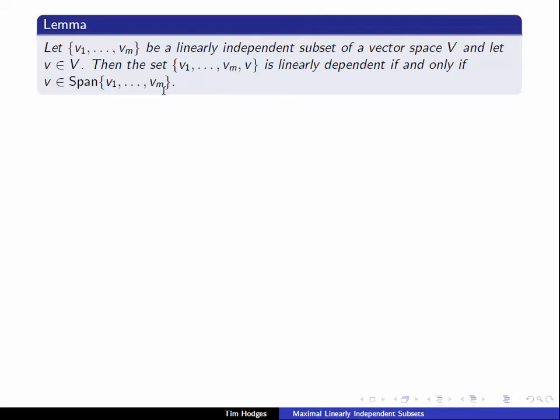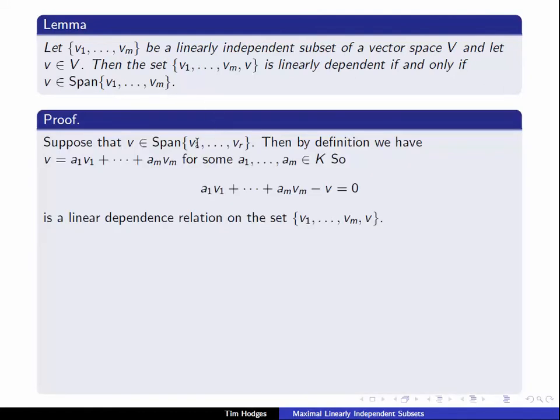Well, this is a fairly intuitive result. Let's just describe how we proved this. So first, let's suppose that V is indeed in this span and show that this set is linearly dependent. So suppose V is in the span of V1 up to Vn. Then by definition, we have that V can be written as some kind of linear combination of these Vs with the AIs coming from the field. But then if we just subtract off V from the left-hand side, we get the following combination equal to 0. And since this coefficient of V is minus 1, which is not 0, then this is definitely a linear dependence relation on this set. So the set is linearly dependent.